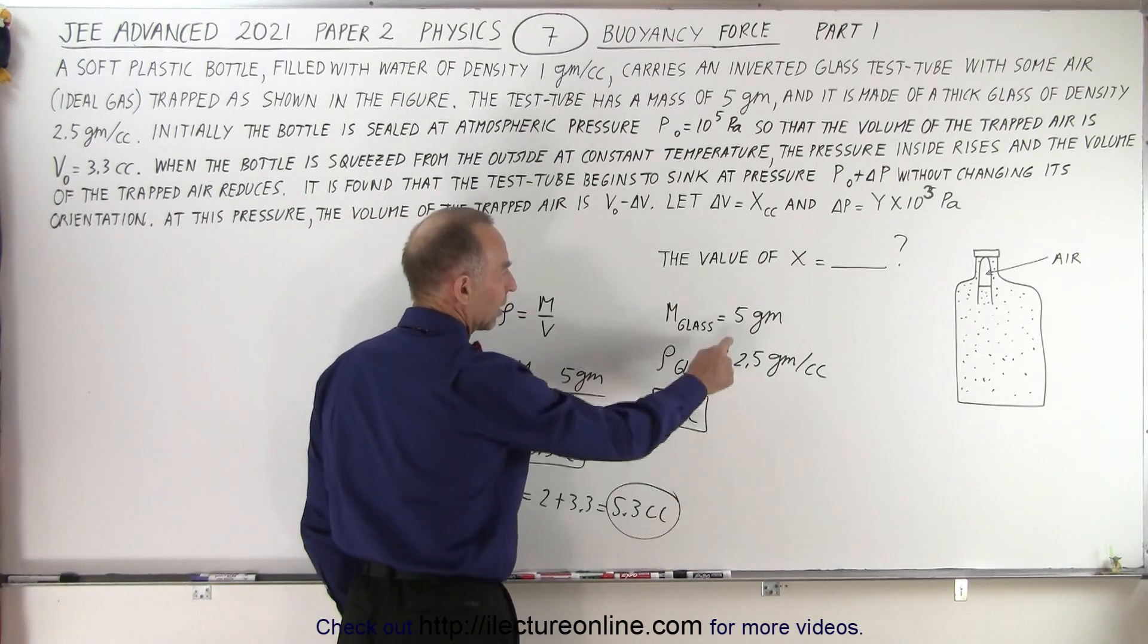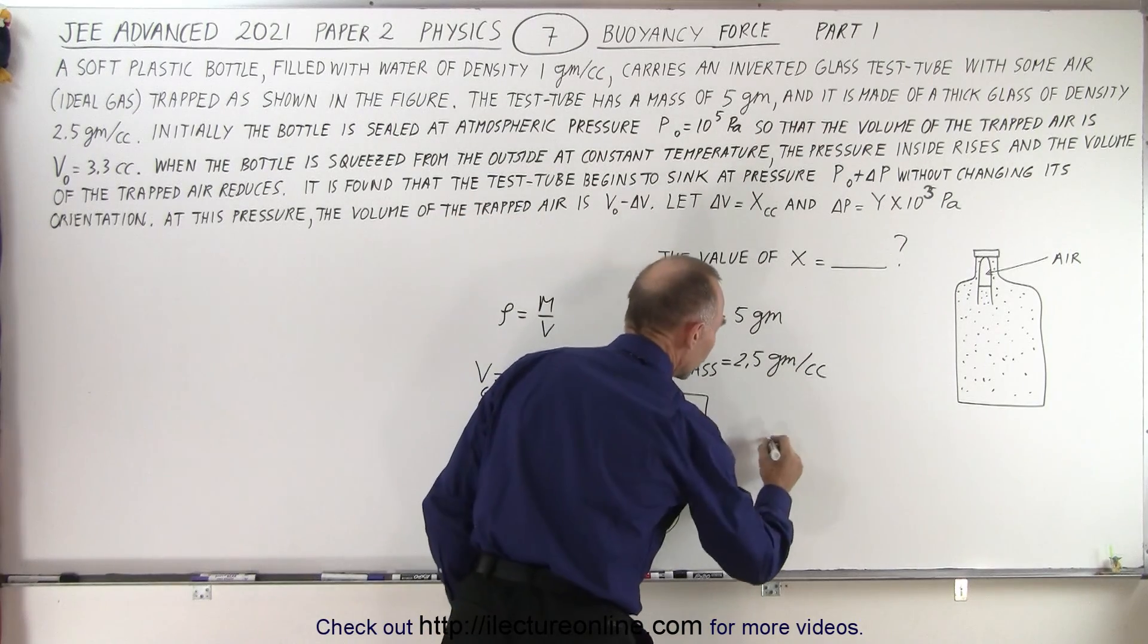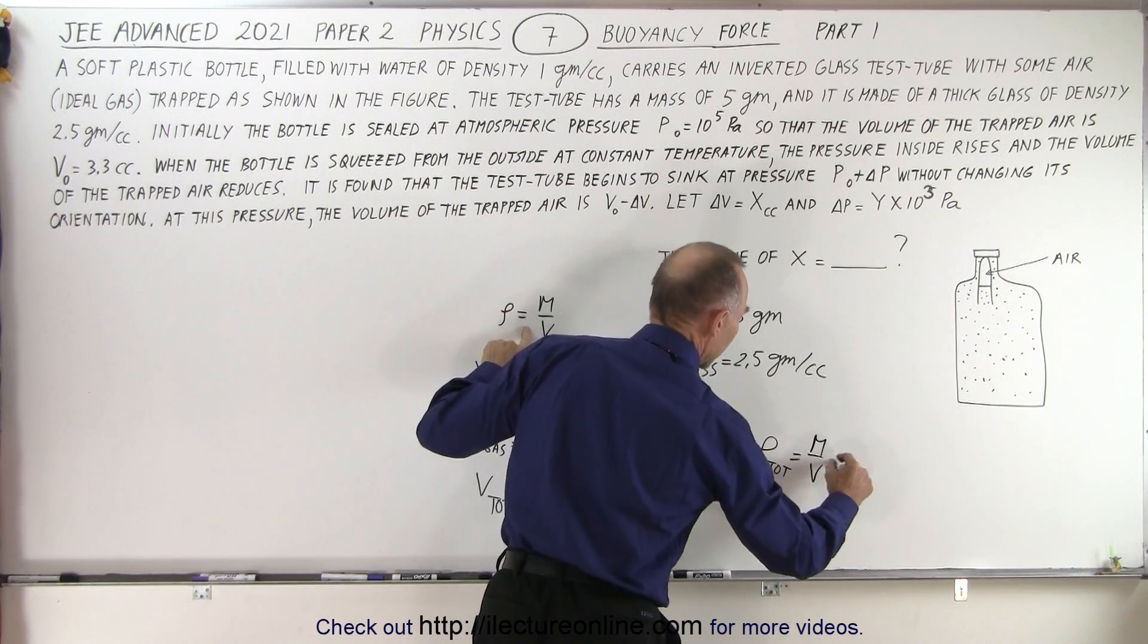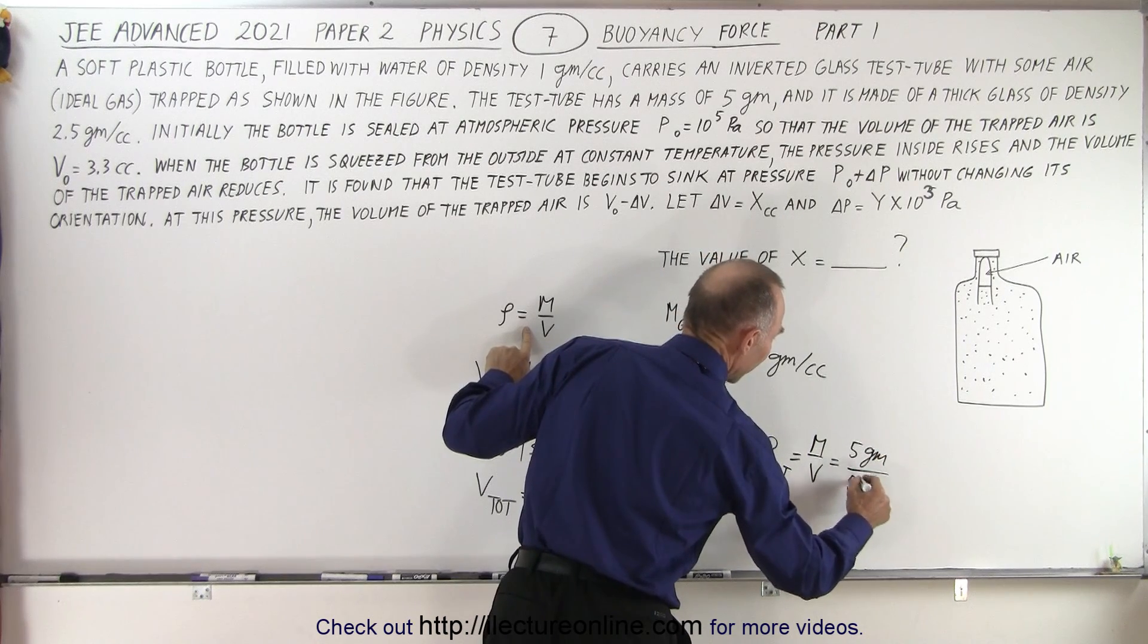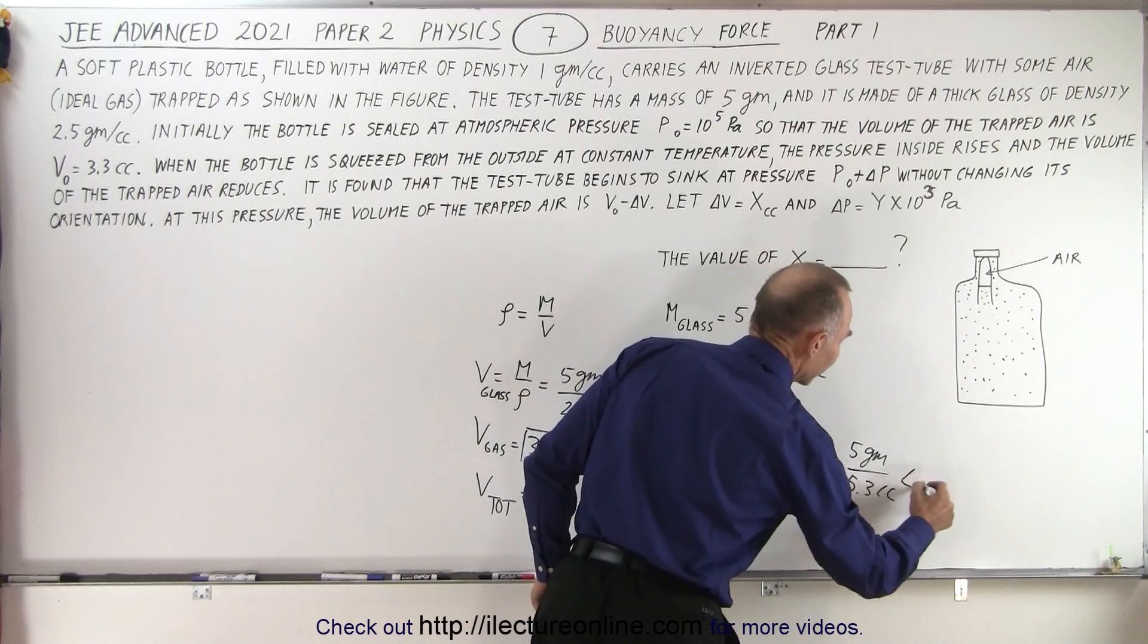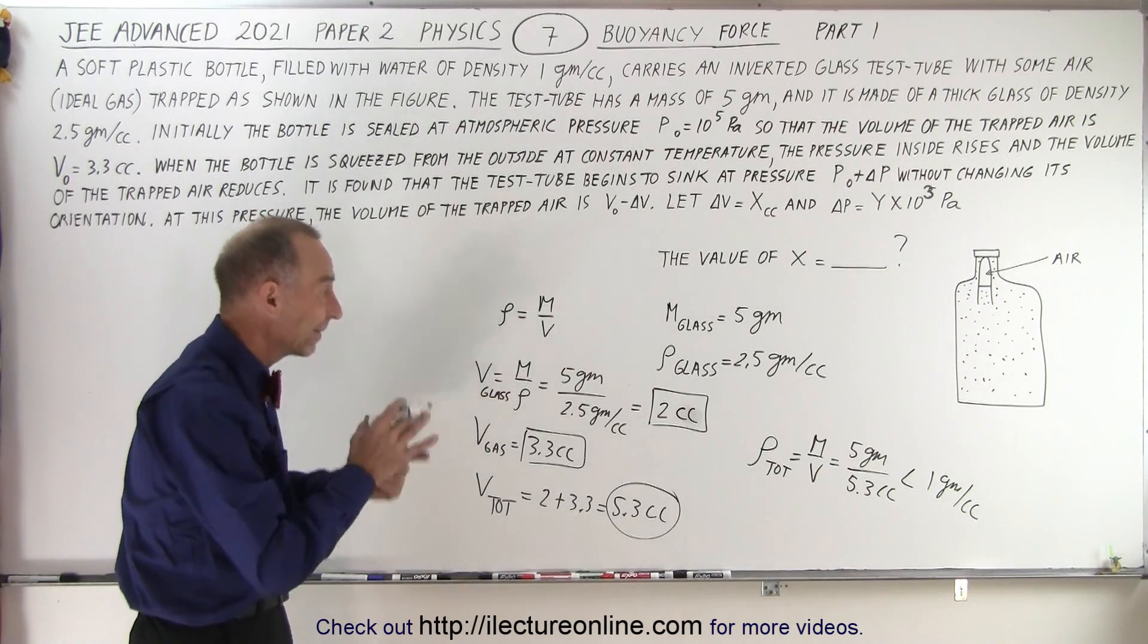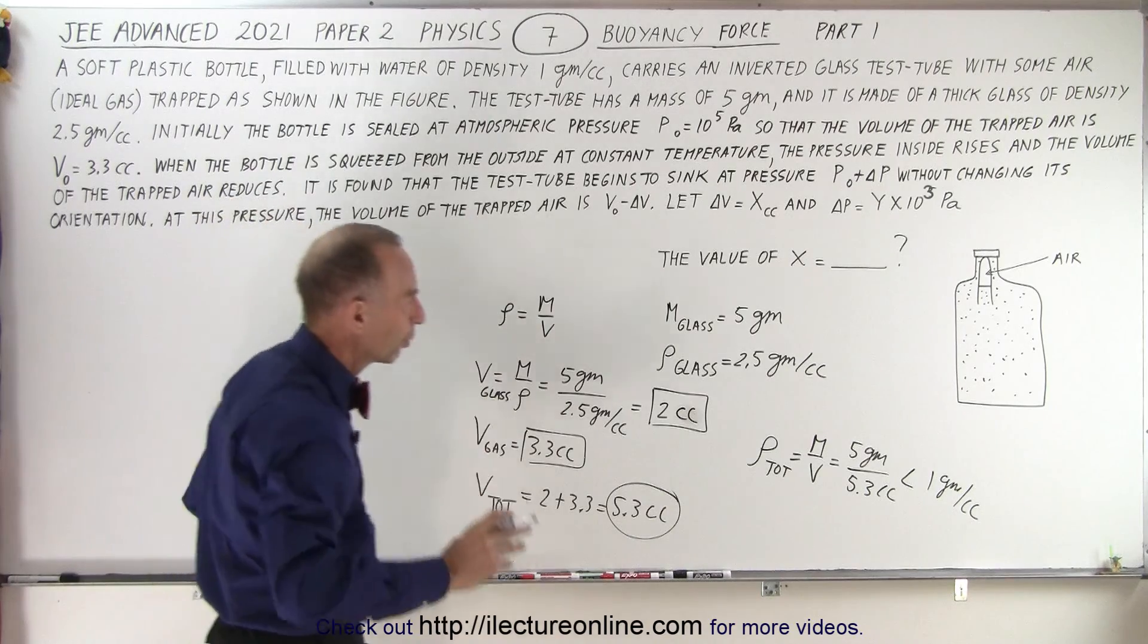So we know that the volume is 5.3 cc, the mass of the glass is 5 grams, so the density total of the glass and the gas will be the mass over the volume, and the mass is 5 grams and the volume is 5.3 cc's. As you can see, that is less than one gram per cc. In other words, the total of the glass and the gas combined is less than the density of the water, and therefore the buoyancy force will push it up to the very top.